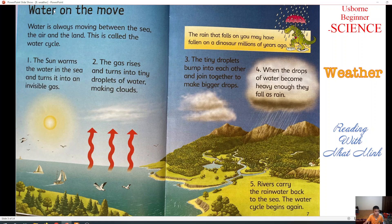Next part we will learn about water on the move. Water is always moving between the sea, the air and the land. This is called the water cycle. First, let's learn about the cycle of water. First, the sun warms the water in the sea and turns it into invisible gas.